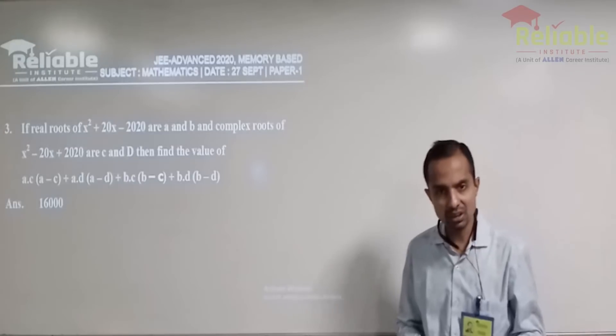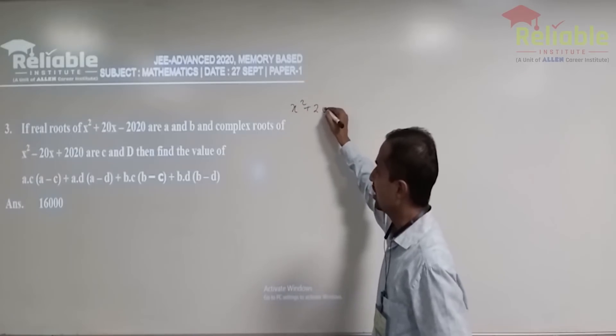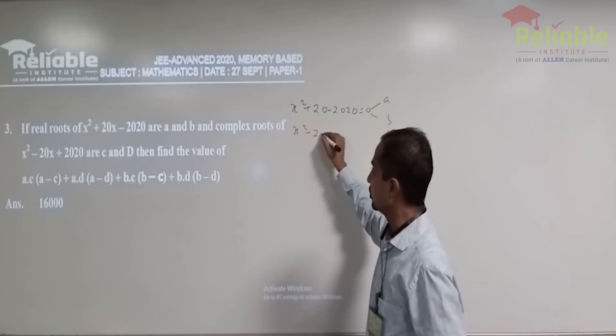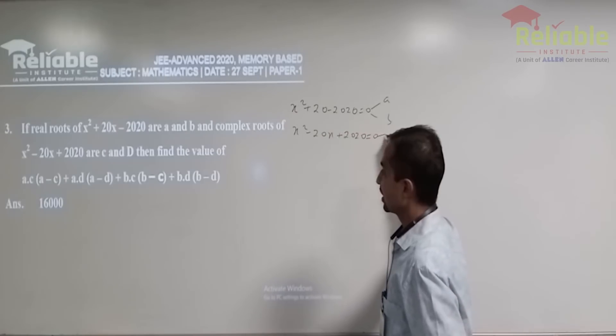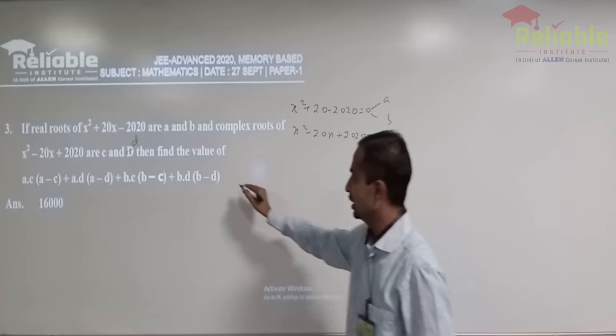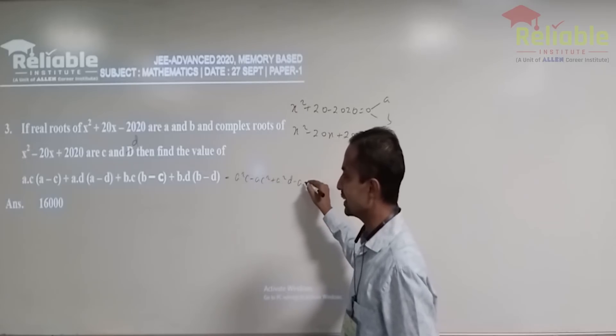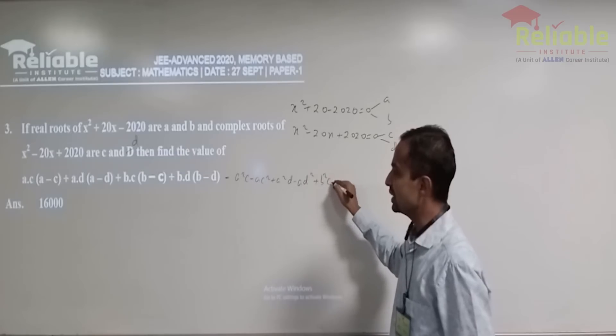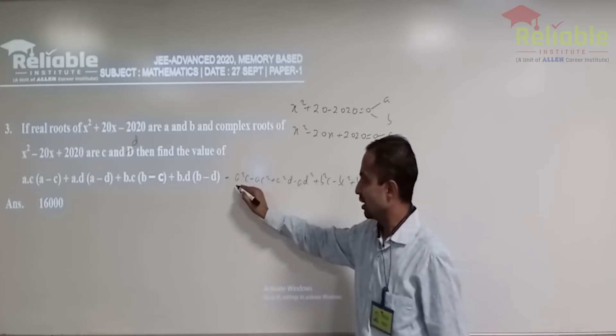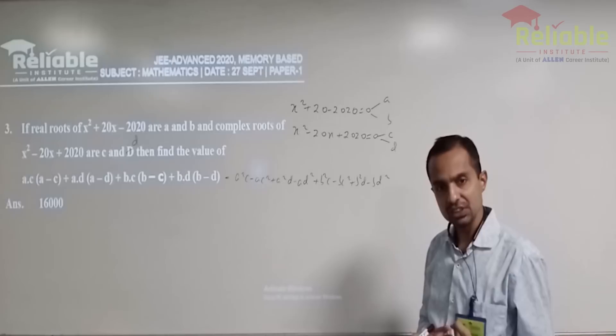So now let's discuss question three of paper one. This is from quadratic equation and the question is a little straightforward to comprehend. A quadratic equation is given and the roots are A and B. Another quadratic equation is given and the roots are C and D. This is a lowercase d. Then this expression needs to be find out. So if you were to expand this one, A square C minus AC square, A square D minus AD square, then B square C minus BC square, B square D minus BD square. Certainly we are looking for packets of A plus B, AB, C plus D, CD kind of.